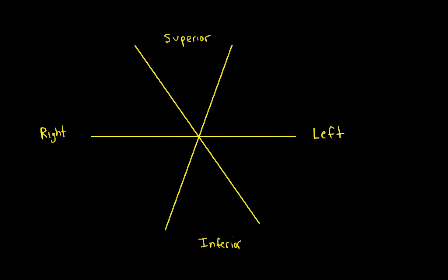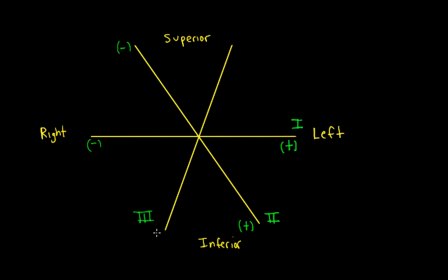In the triaxial diagram, lead 1 has its positive pole on the left arm and negative pole by the right arm. Lead 2, derived from Einthoven's triangle, has its positive pole inferiorly at the left leg and its negative pole by the right arm. Lead 3 also has its positive pole by the left leg and its negative pole by the left arm.